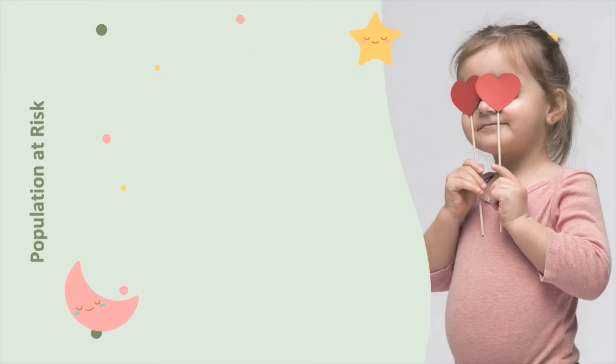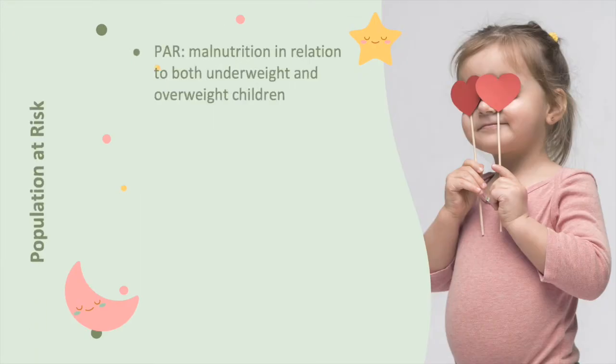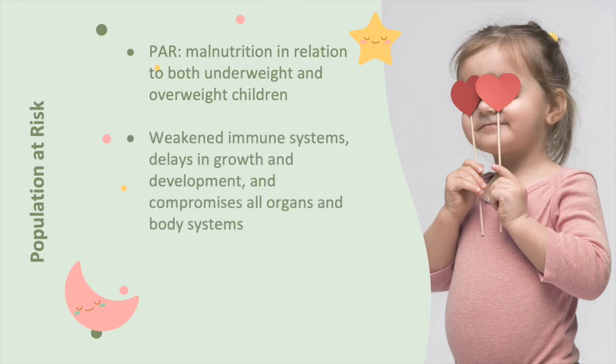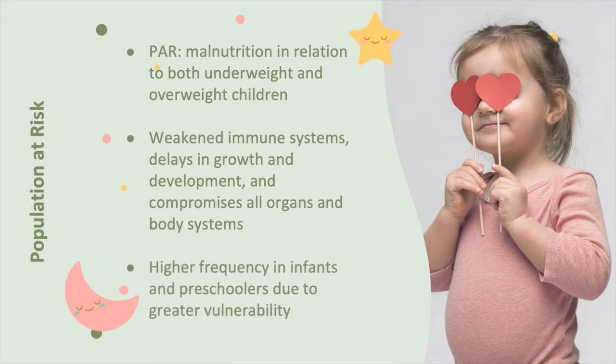The population at risk. Malnutrition affects both underweight and overweight children. They are at risk because malnutrition causes weakened immune systems, delays in growth and development, and compromises all organs and body systems. There is a higher frequency in infants and preschoolers due to greater vulnerability in these age groups.